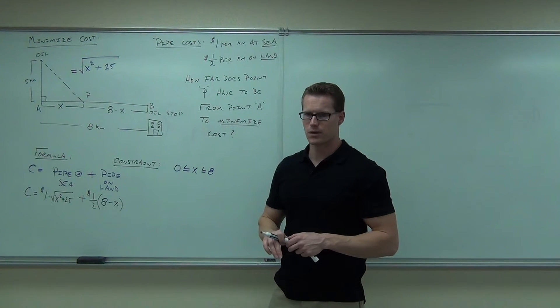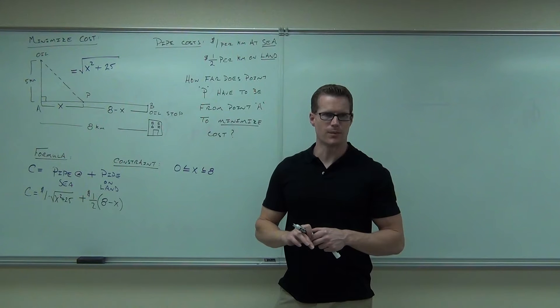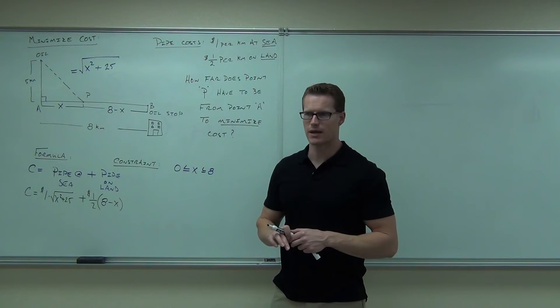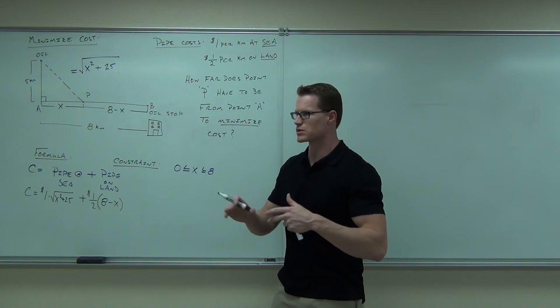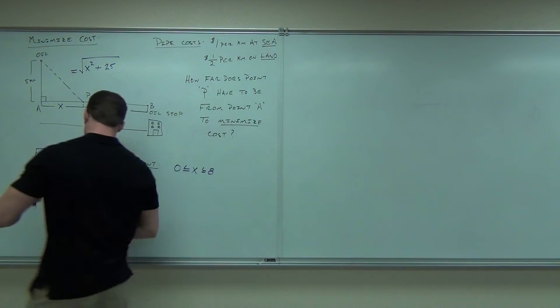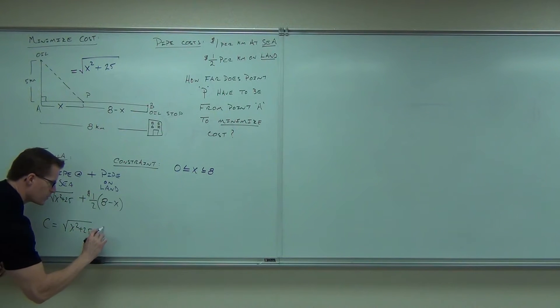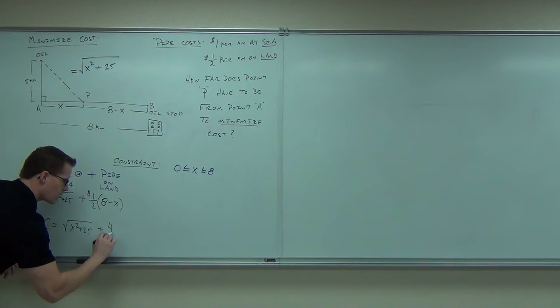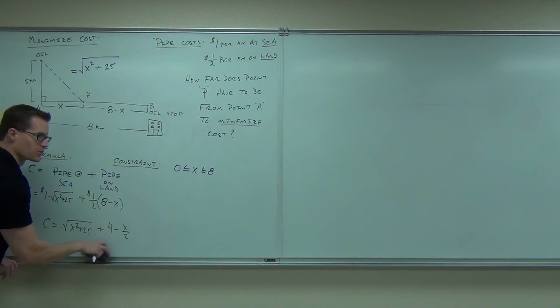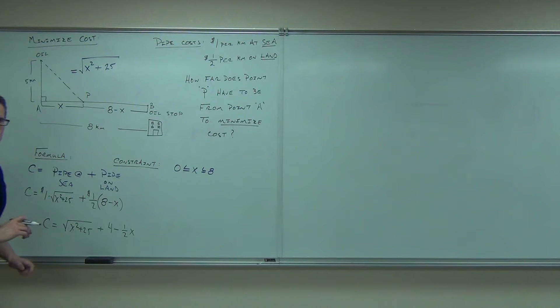Now, what do you want to do? What do you want to do with this? Maybe before we take the derivative, make it look a little bit better. Probably distribute that half into that 8 minus X, because you don't want to start dealing with derivatives until it looks kind of pretty. Deal with that 1 out front, that looks nasty, so it doesn't have to do anything, but it looks silly. 1 times anything is anything, so the square root of X squared plus 25, plus this is going to give you 4 minus X over 2, or 1 half X if you prefer.